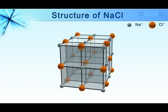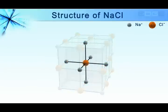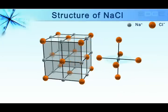And similarly, each Cl- ion is surrounded by 6 Na+ ions. As you can see, each sodium ion is octahedrally surrounded by 6 chlorine ions.